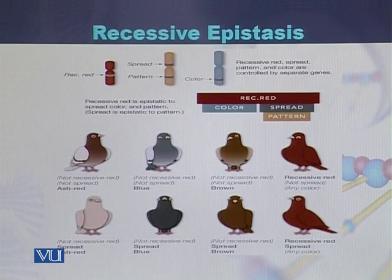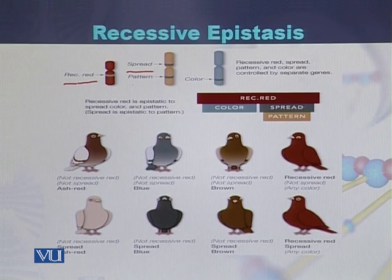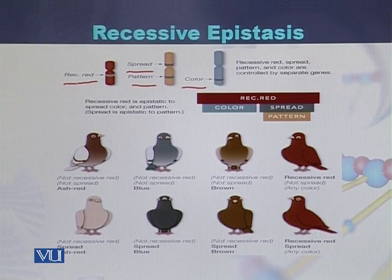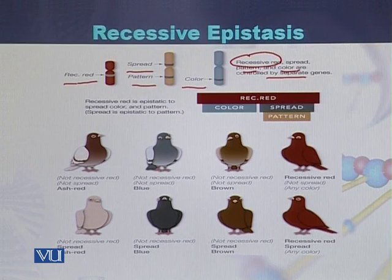The second example of recessive epistasis involves pigeons, where there are four different genes. Gene 1 controls the recessive red color and is present on one chromosome. Two other genes, responsible for spread and pattern, are present on another chromosome. A third gene controls the color in pigeons. These four genes are present on different chromosomes, and they control recessive red color, spread, pattern, and color respectively.